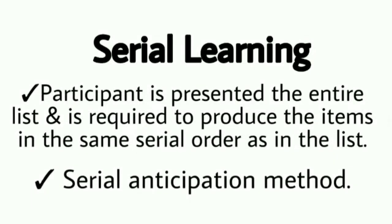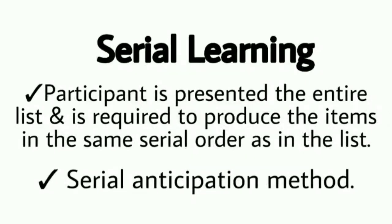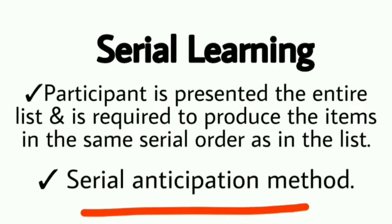Doosra method hai serial learning. Ye method isliye use kiya jaata hai taaki ye pata chale ki participants list of words ko kaise yaad karte hain. Ye pehli wali learning jaisa hi hai, lekin yahan jo learning karni hoti hai woh ek order mein karni hoti hai — serial mein. Jis order mein list of words provide ki jaati hai, usi order mein yaad karni hoti hai aur recall karna hota hai. Is method ko serial anticipation method bhi bolte hain, kyunki humein order mein recall karna hota hai toh hum sochte hain ki aage kaun sa word aayega. Is learning mein bhi tab tak trials hote hain jab tak participant same order mein saare words recall na kar de.